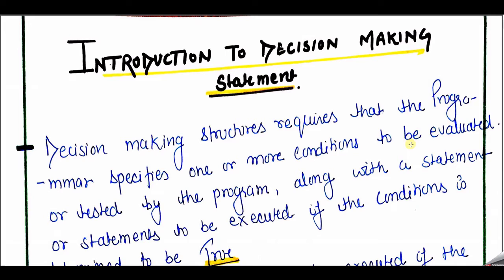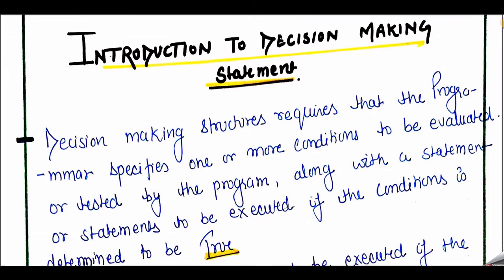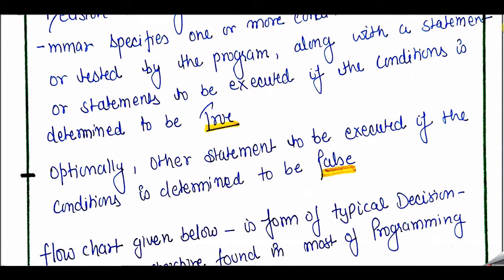What are decision-making statements? Basically, decision-making statements require that the programmer specify one or more conditions to be evaluated or tested by the program, along with statements to be executed if the condition is true, and also we can mention various actions when the condition is false.